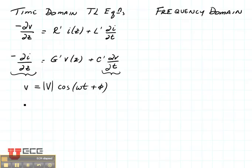If we wanted to write the cosine using Euler's equation, we could write it as e to the j omega t times e to the j phi.